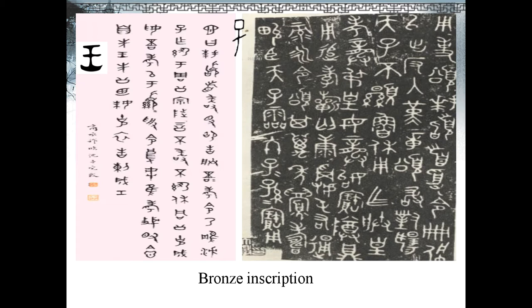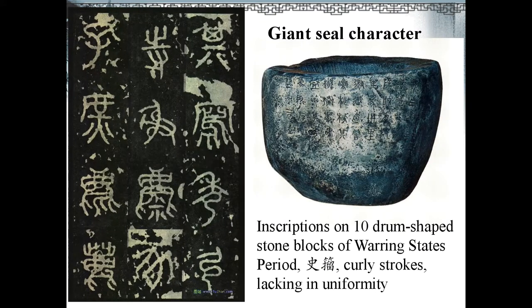Here on the right is one rubbing of Jinwen, really works of art. We may find the character Zi meaning son. Some people try to write Jinwen, and we may appreciate a piece of writing here. Usually people stamp two seals below the signature. And we may find the character Wang meaning king.